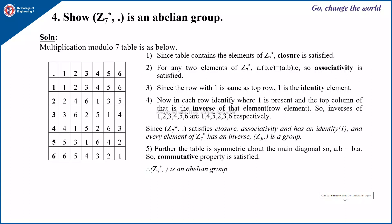We will continue from the previous lecture where we have seen various examples for the group and abelian group. Let us now show that Z7 star dot is an abelian group. Z7 star is nothing but modulo 7 excluding 0, and the operation is multiplication. Here the multiplication modulo 7 table is as below.